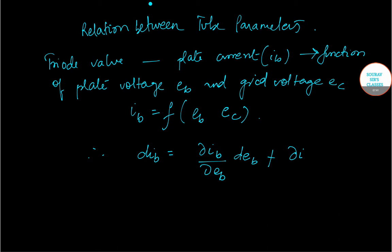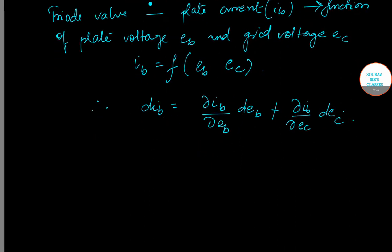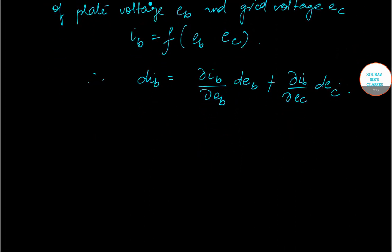So del IB by del EC into DEC. We have direct as well as partial derivatives. We are representing it in this form.